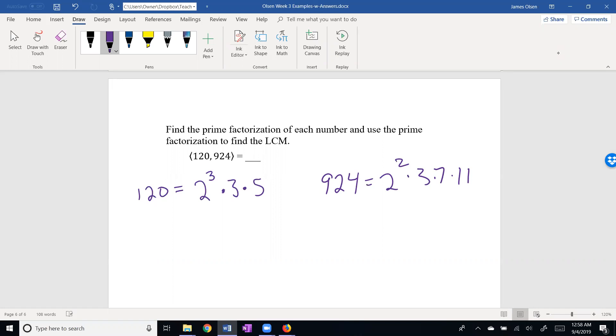In the previous video, we did a factor tree for 120 and 924, and we found the prime factorization. Here's the prime factorization of 120, and the prime factorization of 924 is 2 squared times 3 times 7 times 11. I'm going to need to use all of the factors: 2, 3, 5, 7, and 11, taking them to the highest power that they appear. Highest power on 2 is 3, highest power on all the others is just 1. And if I multiply this out, I believe I get 9,240.